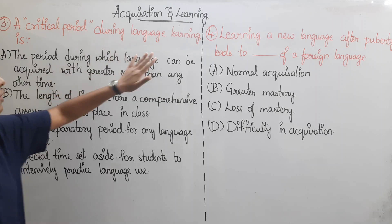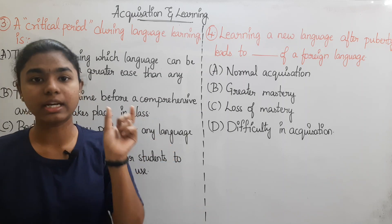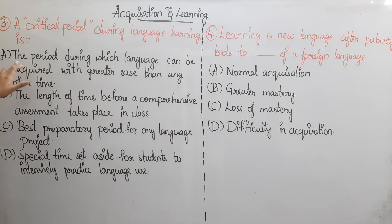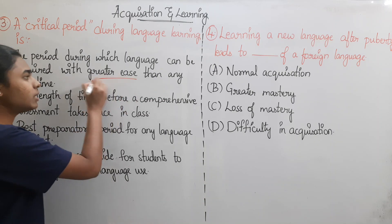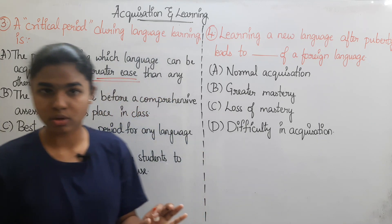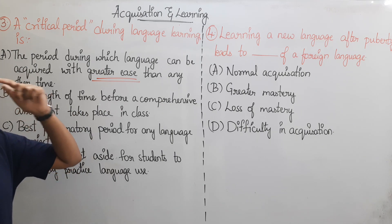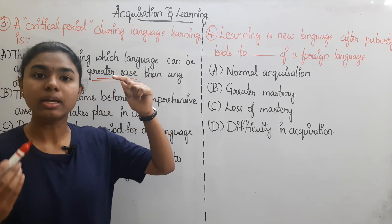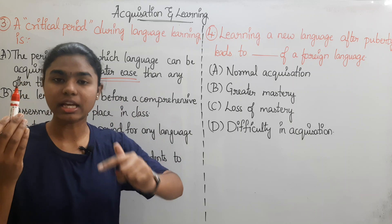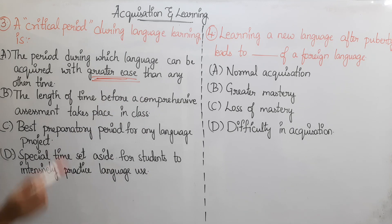Next question: A critical period during language learning is — a time period should be given. Option A: The period during which language can be acquired with greater ease than any other time. If we acquire language easily, at the early childhood stage, we have the language acquisition device and the innate capacity, so we can use greater ease than any other time — that is the critical period.